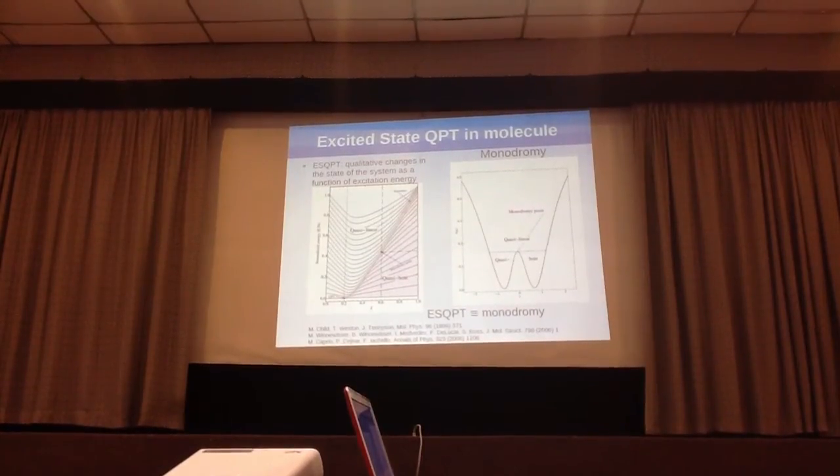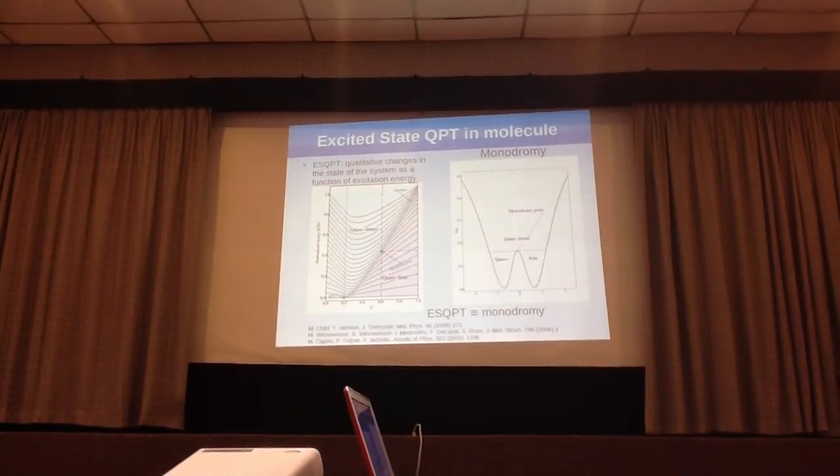As you increase in energy, you go up towards the barrier in the potential. That is the isomerization point. As you pass through it, then you find yourself on a fundamentally different type of potential in the quasi-linear region.